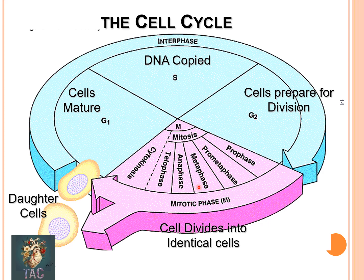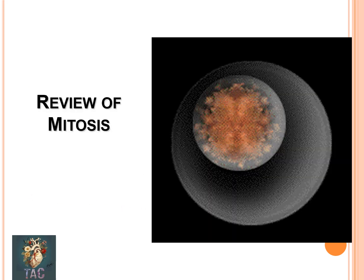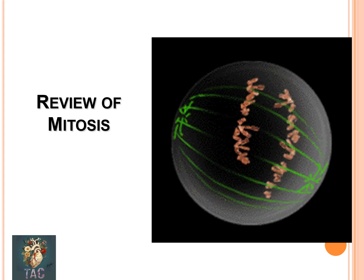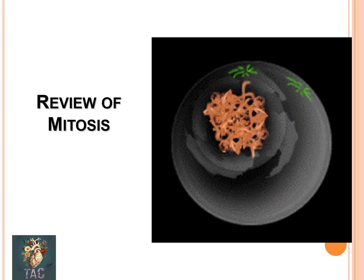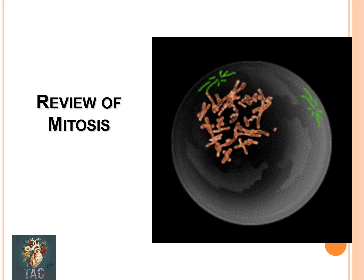During mitosis: in prophase, strands of chromatin shorten and thicken. In prometaphase, the nuclear membrane disappears and microtubules extend into the central region. In metaphase, chromosomes align themselves on the equatorial plate, also called the metaphyseal plate. In anaphase, each chromosome splits lengthwise into new chromosomes. In telophase, chromosomes uncoil, lengthen, and the nuclear membrane reforms. After which cytokinesis occurs. You can see the two centrioles dividing and moving to opposite sides throughout these stages.